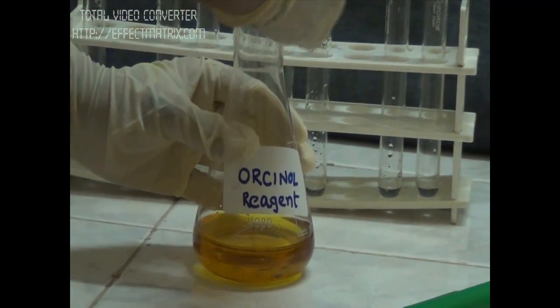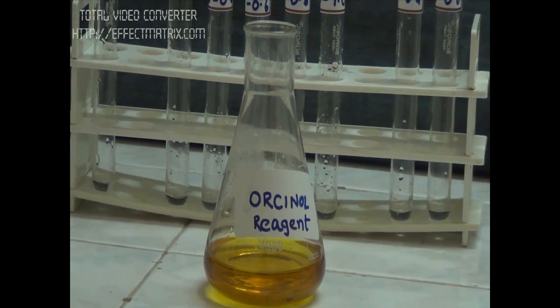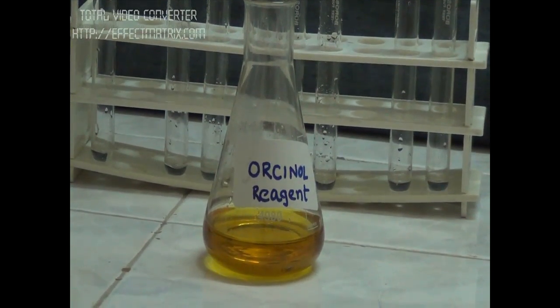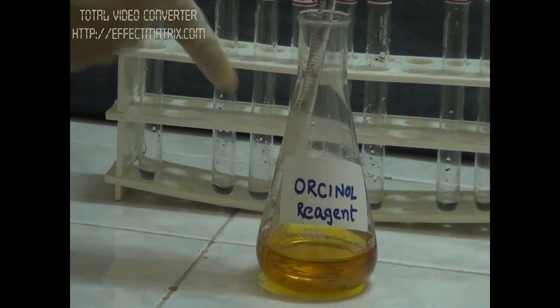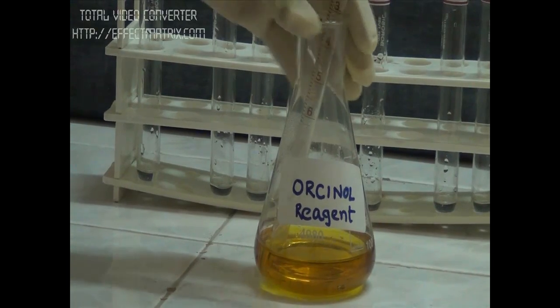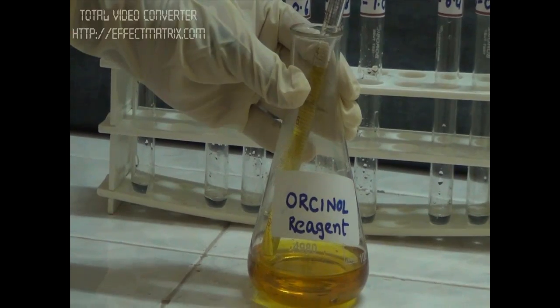The concept is that ribose sugar, in very acidic conditions, gets converted to furfural, which then reacts with our reagent, orcinol. And it gives a green color complex at 665 nm.